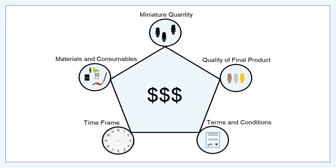They are, in no particular order: the miniature quantity, that's the amount of models involved; the quality of the final product that you want; the terms and conditions associated with it; the time frame for delivery; and the materials and consumables. Every one of these boils down to multiple minor parts, but they're the big ones that overall make up the cost, the dollar value to you, the consumer.